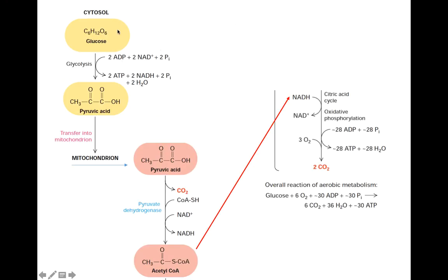अगर हम energy metabolism of glucose पे complete एक नजर डाले तो complete metabolism of glucose actually start होती है from the glycolysis जो के cytoplasm के अंदर होती है। Glucose through the process of glycolysis breakdown होके pyruvate acid बनाता है।